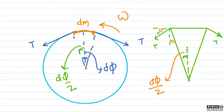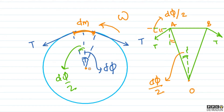अगर यह angle dφ/2 है, तो tension और dotted line के बीच में भी angle dφ/2 ही हो जाएगा। क्योंकि OA radial direction है और tension tangential है, इनके बीच में angle 90 degree है। इसलिए alternate interior angle से यह angle भी dφ/2 हो जाएगा। तो यह दो tensions का cos component — T cos(dφ/2) — दोनों तरफ cancel out हो जाते हैं।